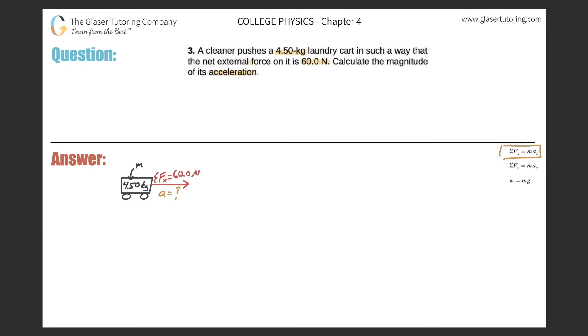So I have the sum of all the forces in the x direction should equal the mass of the object multiplied by the acceleration in that particular direction. So the net force is 60, the mass is 4.50, and the acceleration is what we're looking to find.